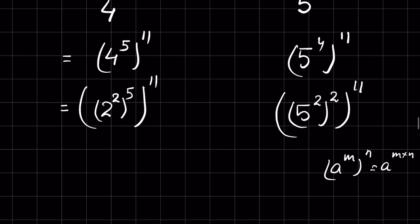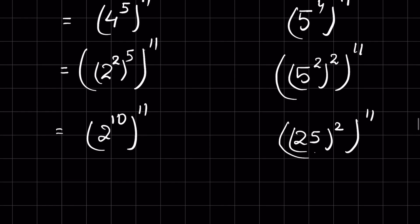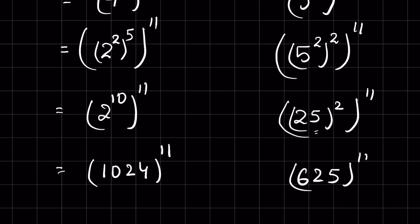Again using the property that a raised to the power m, whole raised to the power n, equals a raised to the power m times n, the left side becomes 2 raised to the power 10, whole raised to the power 11, and the right side becomes 25 raised to the power 2, whole raised to the power 11. We know 2 raised to the power 10 is 1024, and 25 squared is 625. So we get 1024 raised to the power 11 versus 625 raised to the power 11.